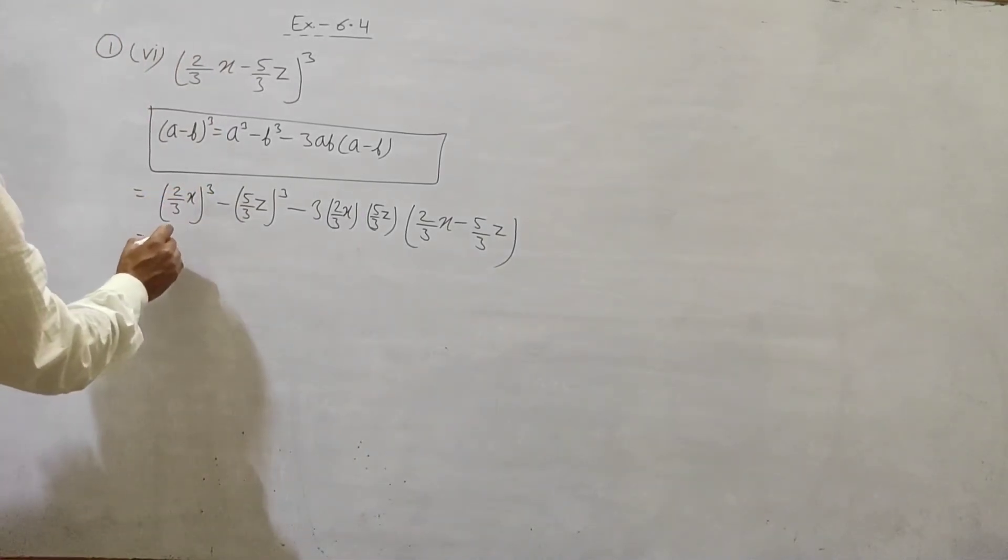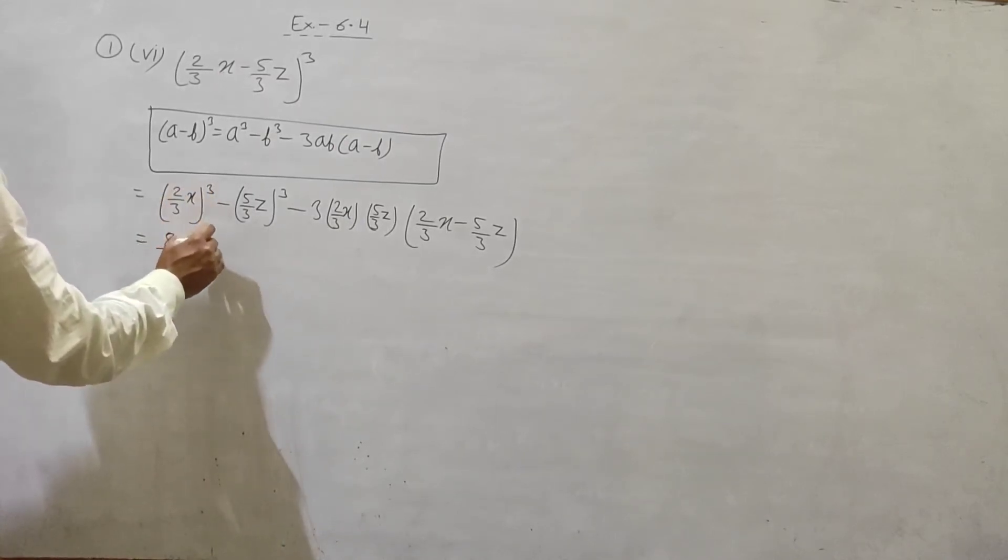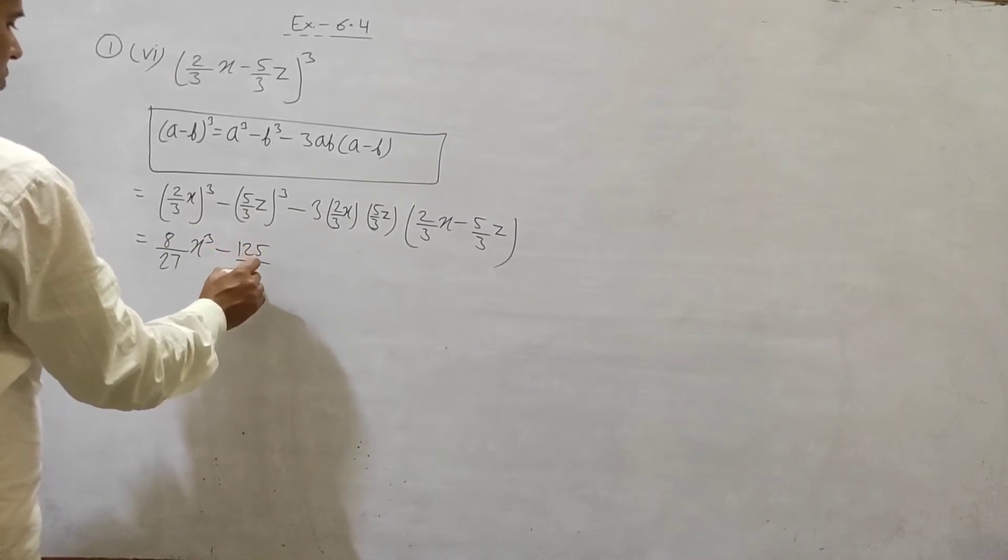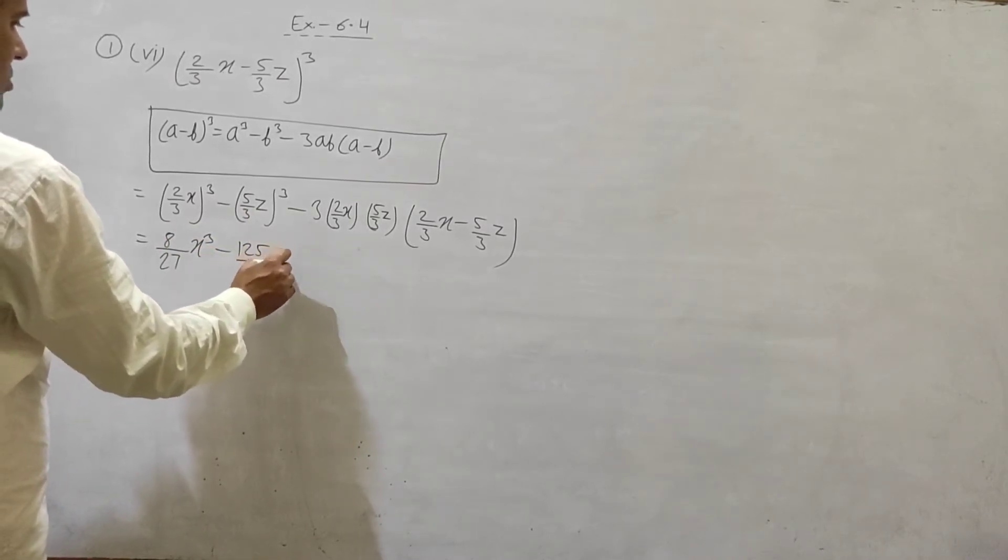Cube of 2: 2 multiplied 2 multiplied 2 equals 8. 3 cube, 27. x raise to power 3. Cube of 5: 125. Cube of 3: 27. z cube.